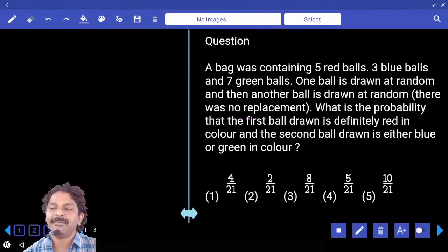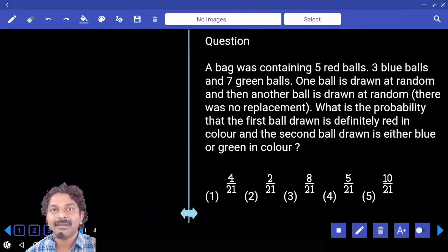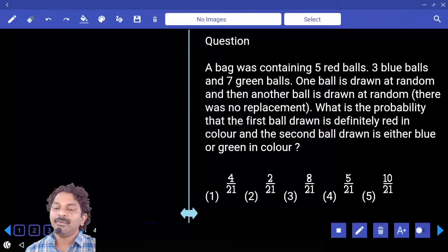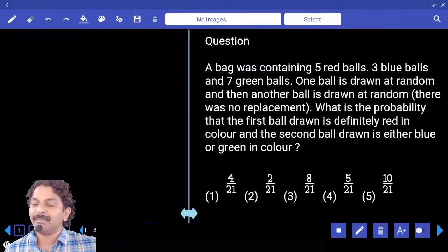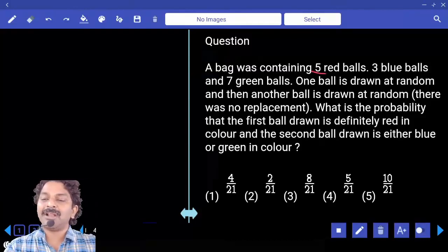The bag was containing 5 red balls, 3 blue balls and 7 green balls. One ball is drawn at random and then another ball is drawn at random, so that means one after another. And there was no replacement. What is the probability that the first ball drawn is definitely red in color and the second ball drawn is either blue or green? So finally, how many balls we have total?